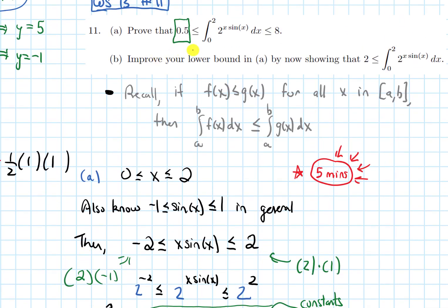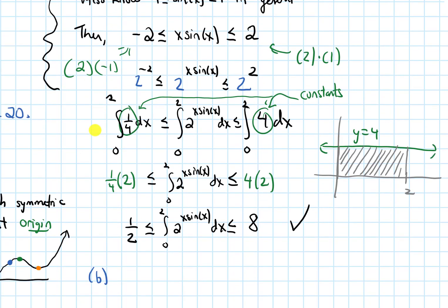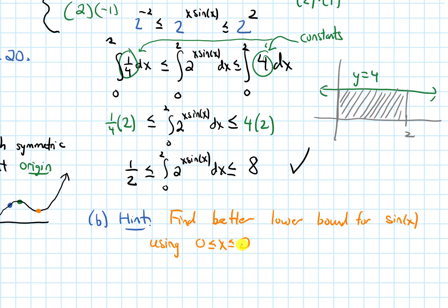Now let's look at Part B. It says to improve the lower bound in A by showing the integral is actually greater than or equal to 2 instead of just 0.5. That means we need to find a higher lower bound for x times sine x than negative 2. My hint is that we want to find a better lower bound for sine x using the fact that x is specifically in the interval from 0 to 2. So: can you find something better than simply negative 1 as a lower bound for sine x on that interval? I'll leave that for you to think about.